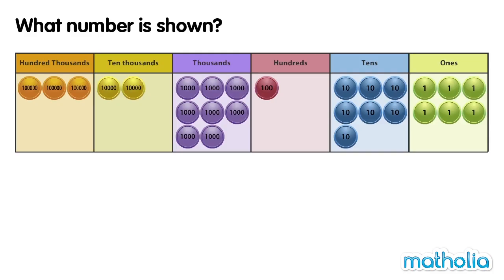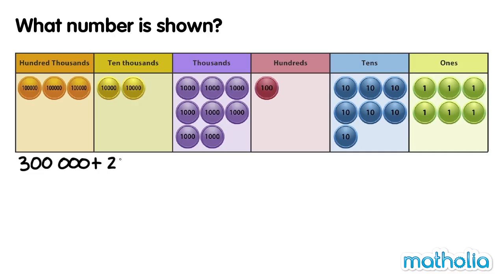Let's start with the 100,000s. In the 100,000s place, there are three counters. They have a value of 300,000. In the 10,000s place, there are two counters. They have a value of 20,000.